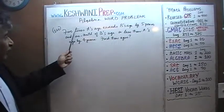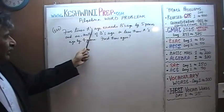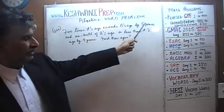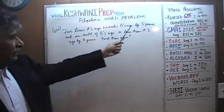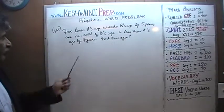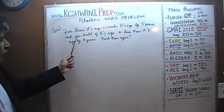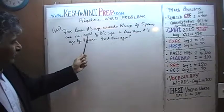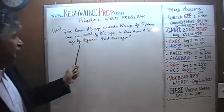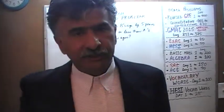We are told that 5 times A's age — we have two people, A and B — 5 times A's age exceeds B's age by 5 years. That's going to be our first equation. Then they go on to tell us that 1-tenth of B's age is less than A's age by 4 years. Our job is to find their ages, age of A and age of B.